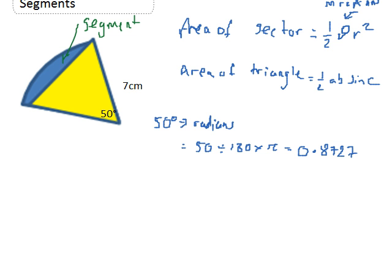The area of my sector is ½ times 0.8727 times 7 squared, which gives me 21.38 cm².